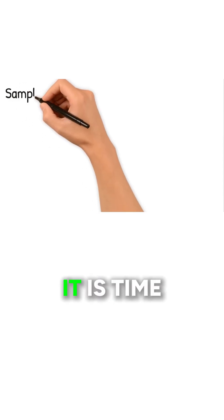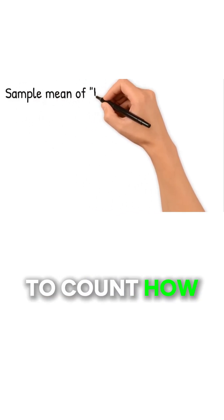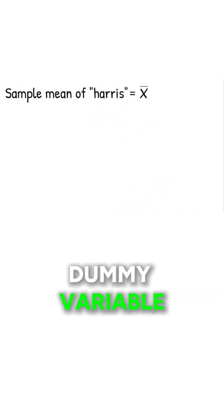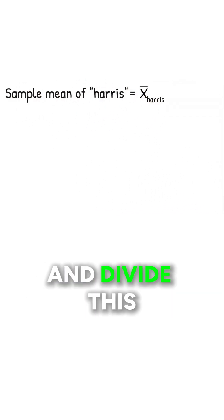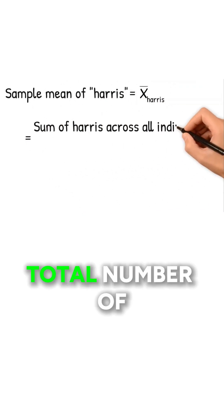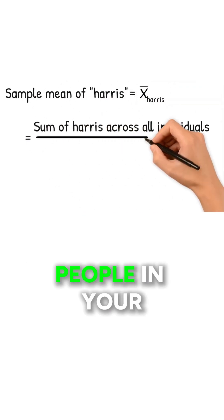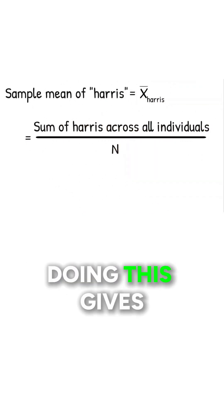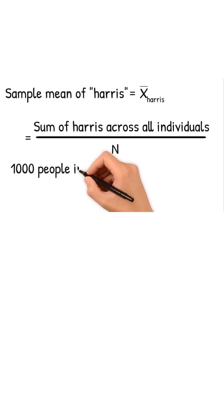After you've done that, it is time to count how many ones you've got for each dummy variable and divide this number by the total number of people in your sample. Doing this gives you the sample average, or sample mean.